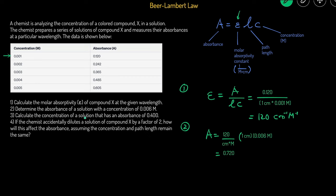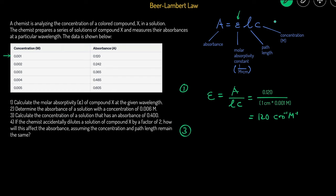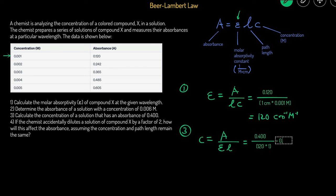For question three, we calculate the concentration of a solution with absorbance 0.4. Solving for C: C = A / (E × L). Absorbance is 0.4, molar absorptivity is 120, and path length is 1 cm. So C = 0.4 / 120 = 0.0033 repeating. The units are molarity since we solved for concentration.